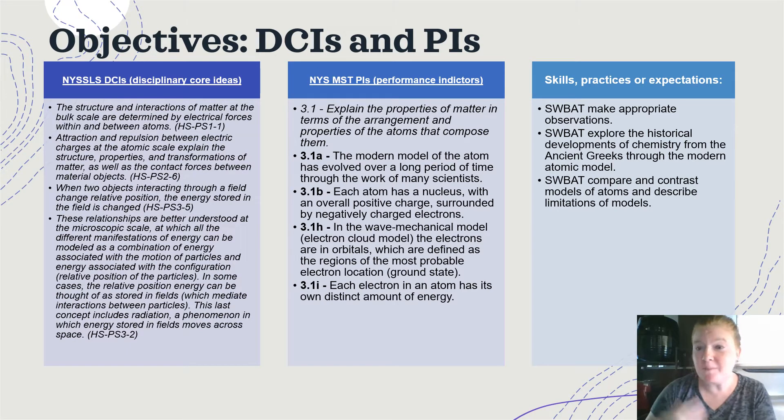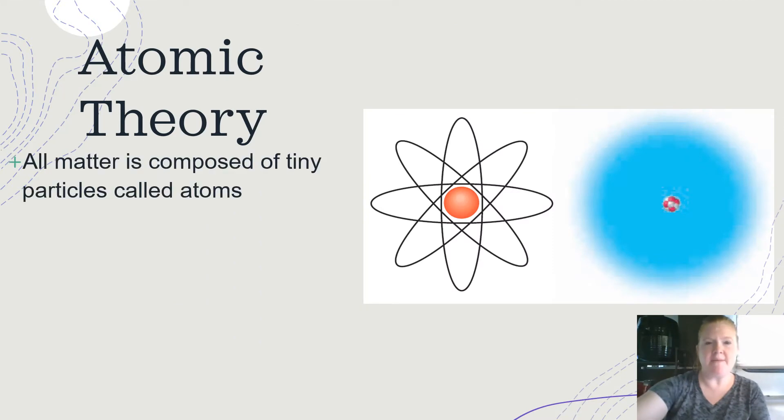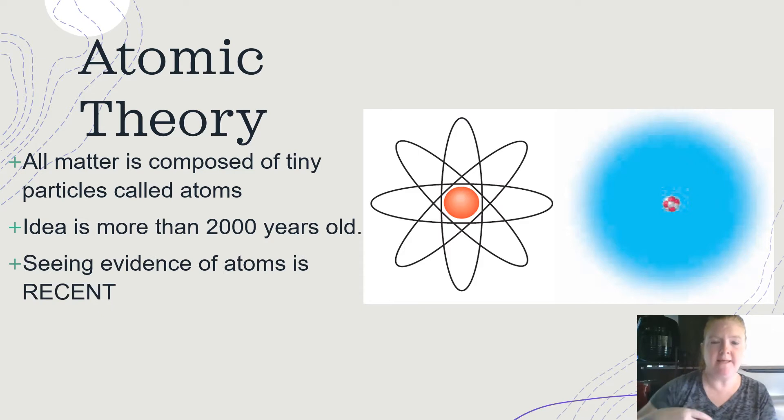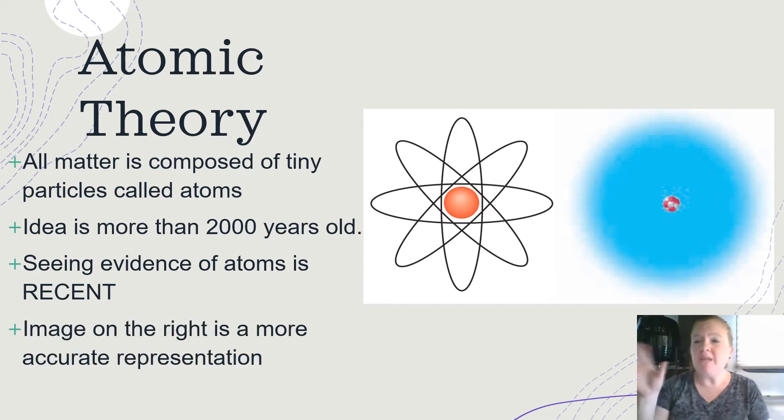All right, here are the objectives, pause and peruse. All right, atomic theory. All matter is composed of tiny particles called atoms. The idea is more than 2,000 years old. Again, back to the ancient Greeks. But the seeing of the evidence of atoms, that's much more recent. The image on the right that you see right here on this slide is a much more accurate representation of what an atom truly looks like based on our current understanding.